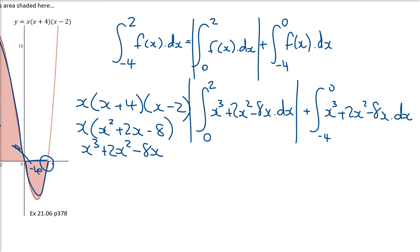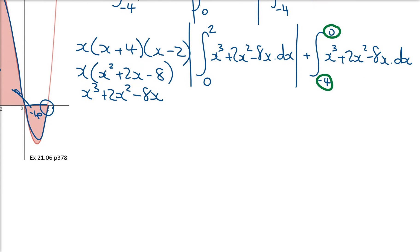The bigger number goes on top, so now I'm going to integrate that. It's going to be x to the power of 4 over 4 plus 2x cubed over 3 minus 4x squared. Are you happy with that? Again between 2 and 0.